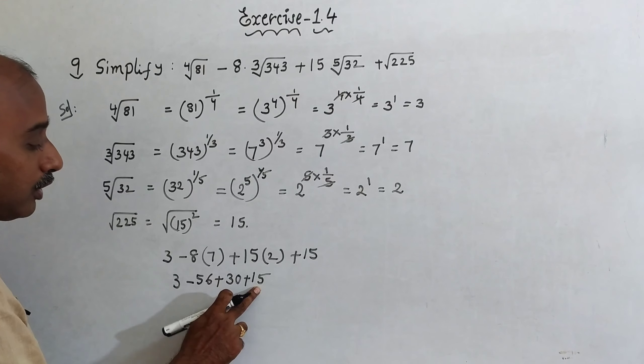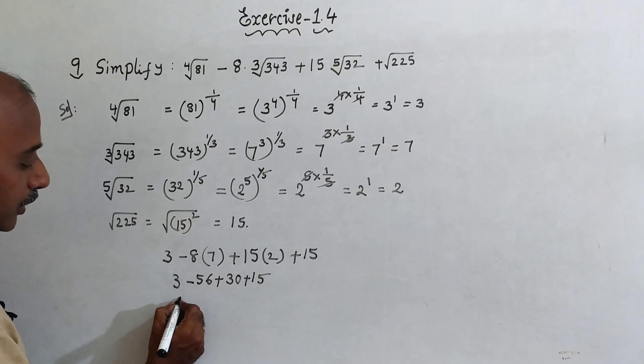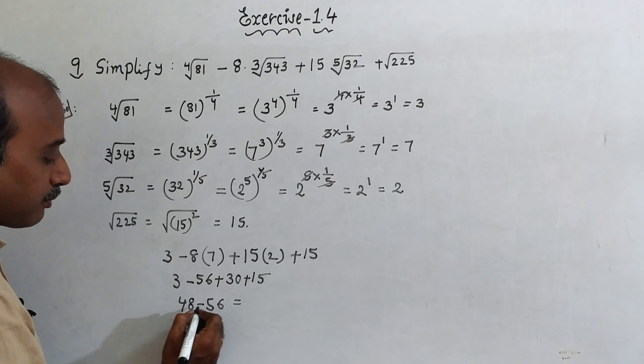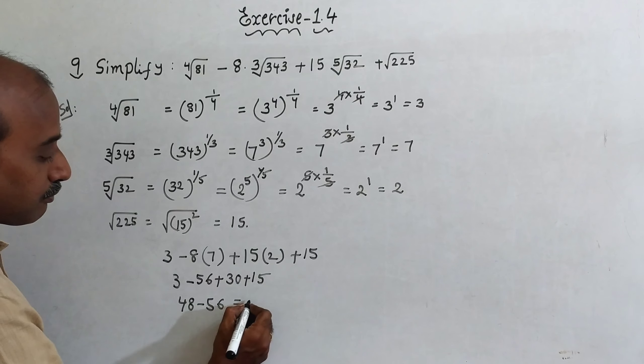So, 30 plus 15 is 45. 45 plus 3 is 48 minus 56. 48 minus 56 is minus 8.